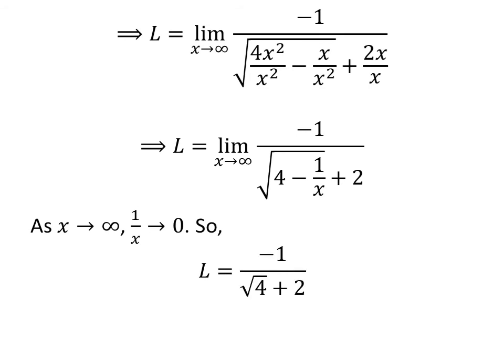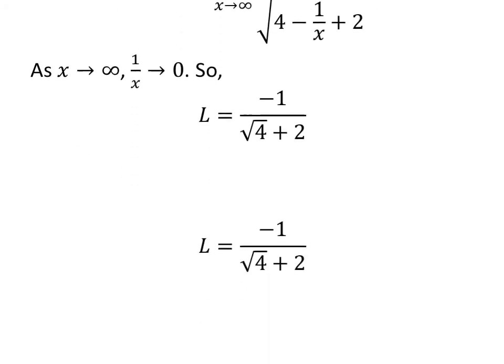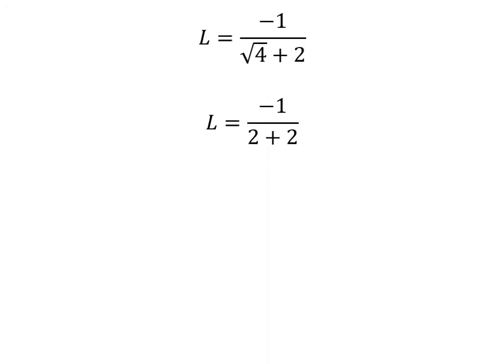We know as x approaches infinity, 1 upon x approaches 0. So L is equal to minus 1 upon square root of 4, plus 2. As square root of 4 is equal to 2, the limit L is equal to minus 1 upon 2 plus 2, which gives the limit L equal to minus 1 upon 4.